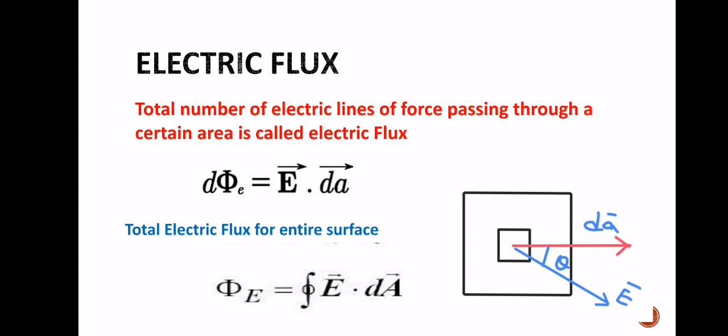Electric flux: the total number of electric lines of force passing through a certain area is called electric flux. It is denoted by phi E. It is the scalar product of electric field intensity and vector area. The electric flux for a small area element is d(phi E) = E · dA, and the total electric flux for the entire surface is phi E = closed integral of E · dA, where dA is the area element of the total surface.